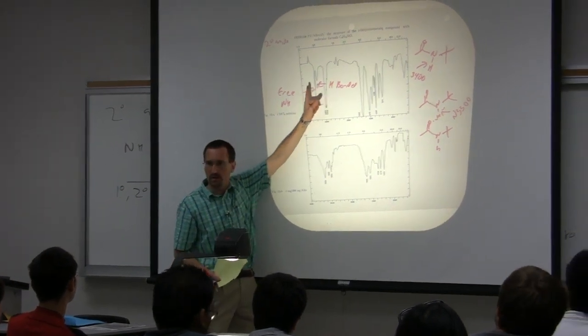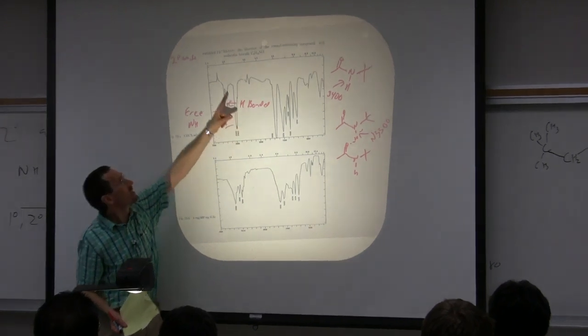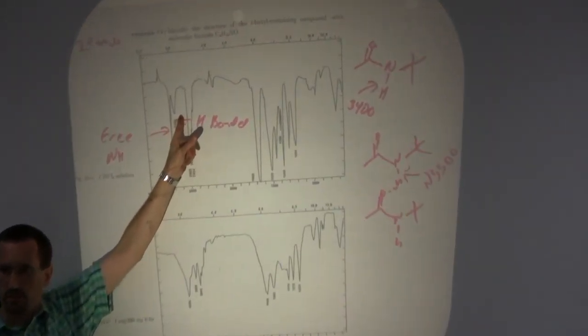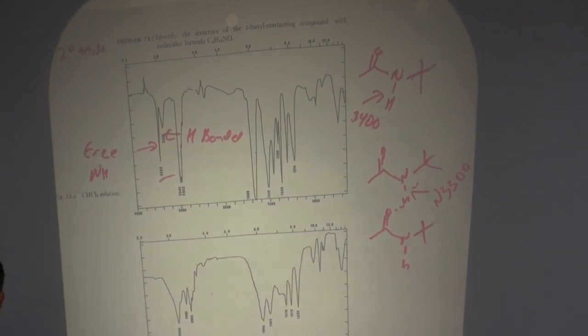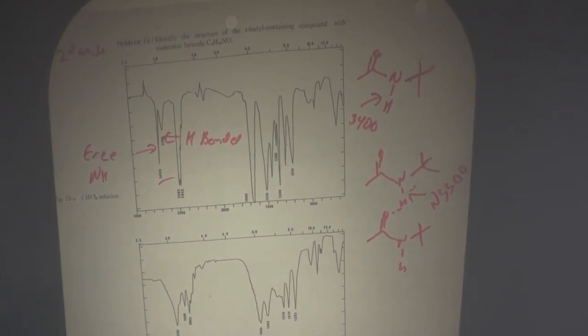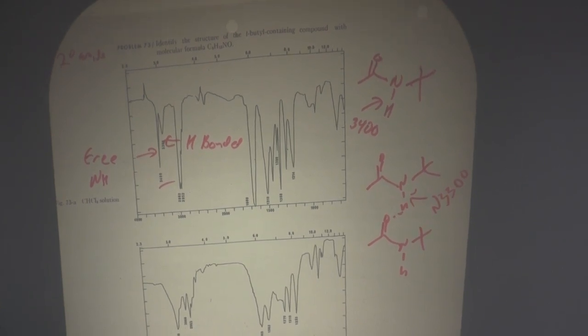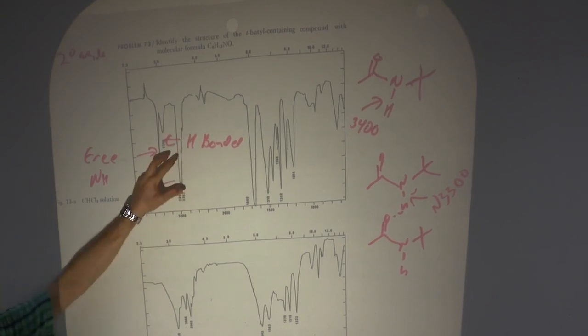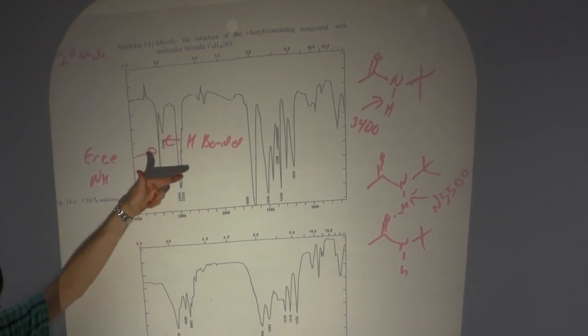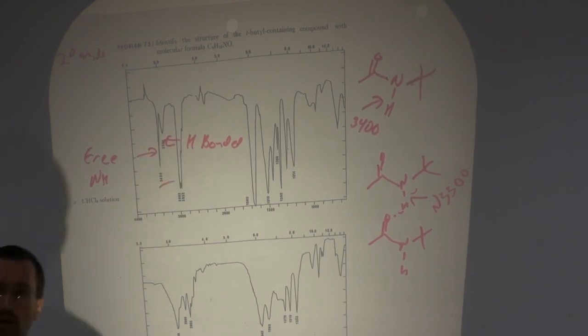What experiment could we do with this sample in chloroform to determine whether the band at 3300 was associated with hydrogen bonded dimer formation? Dilute it. And what would you expect to see? The decrease in the 3300. The decrease in the 3300, or more specifically both bands would decrease because it was diluted, but the relative intensity of the band at 3300 would get lower.